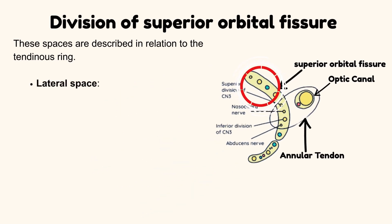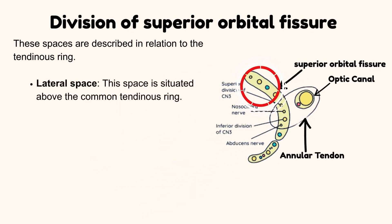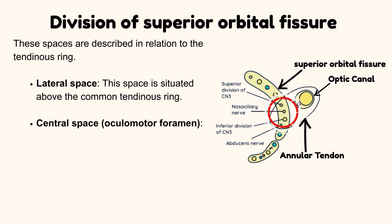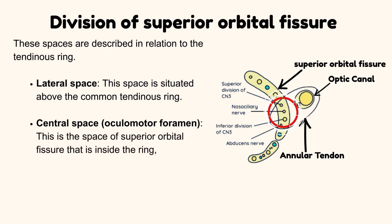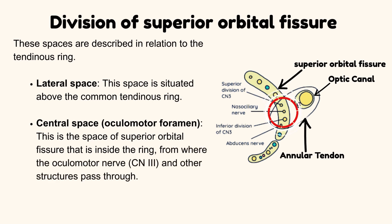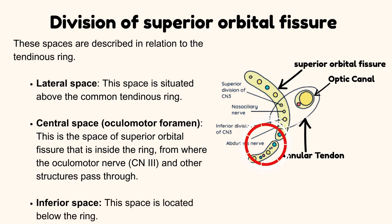The lateral space is situated above the common tendinous ring. The central space, also known as the oculomotor foramen, is the space of the superior orbital fissure that is inside the ring, from where the oculomotor nerve and other structures pass through. The inferior space is located below the ring.